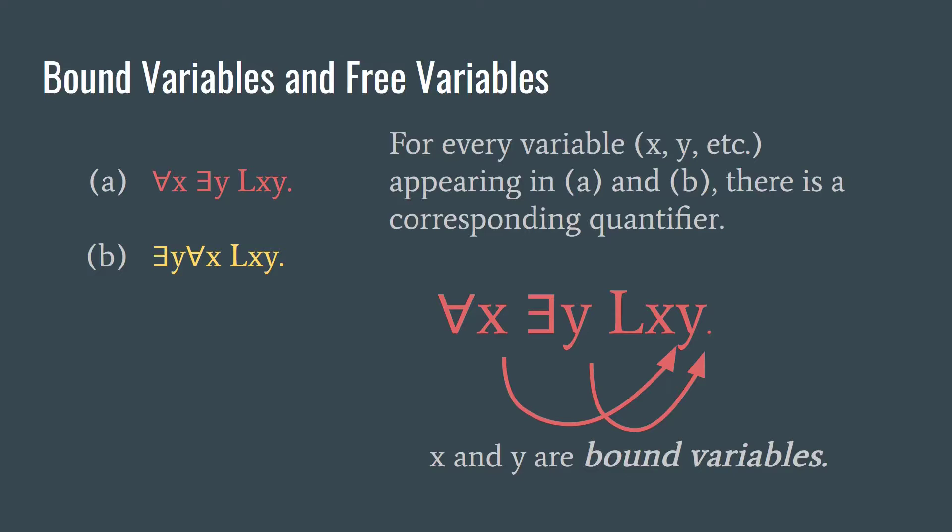Now we need to introduce the notion of a bound variable and a free variable. Remember X and Y are variables. They're not like A, B, and C which stand in for names of a specific person. X and Y, we don't know who X and Y are in particular. We're just saying everyone and someone. No particular object is being denoted here. Now notice that in both A and B, X and Y each have a quantifier that is binding them. That is to say we have a quantifier attached to the X and a quantifier attached to the Y. So LXY here contains no instances of free variables. All of the variables in these are bound variables.